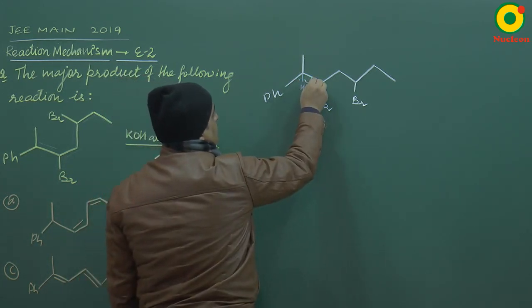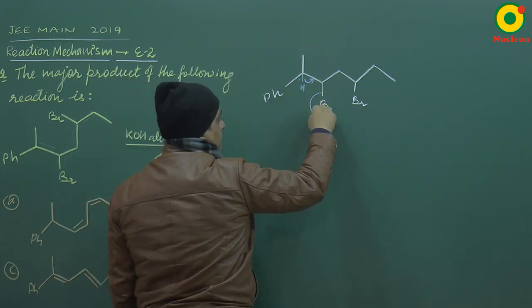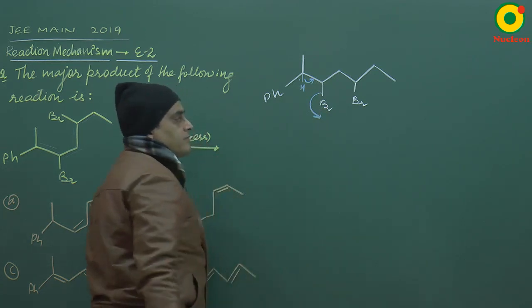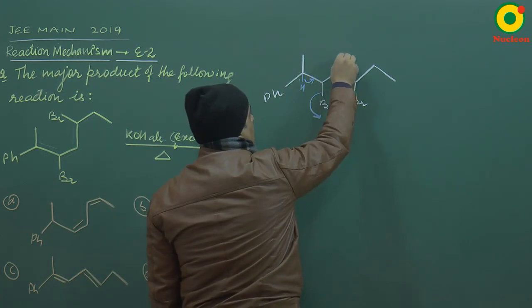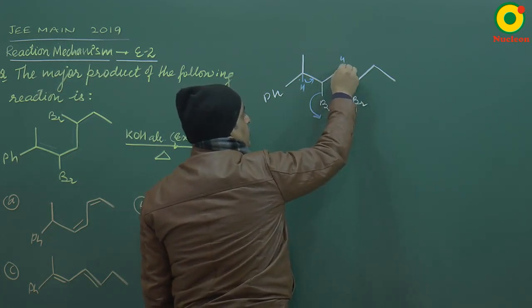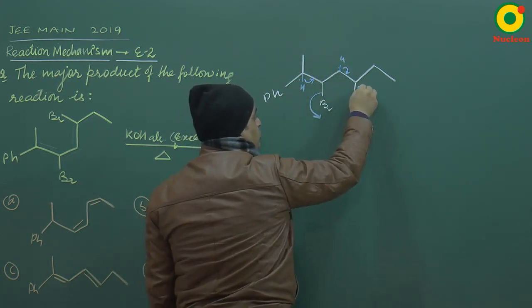So from here, this H is removed and becomes this, a double bond. And since there is a double bond, this bromo, the other double bond conjugation will become stable product.